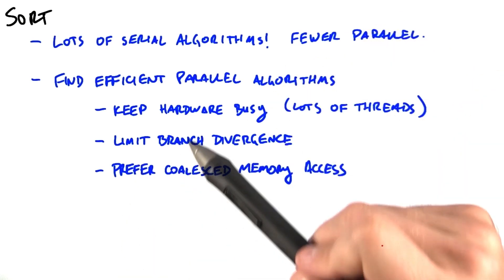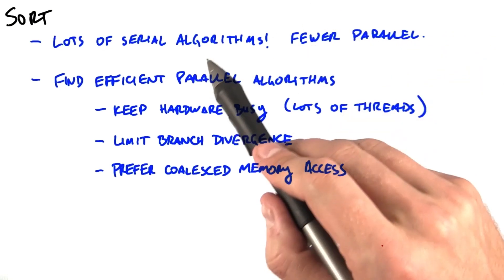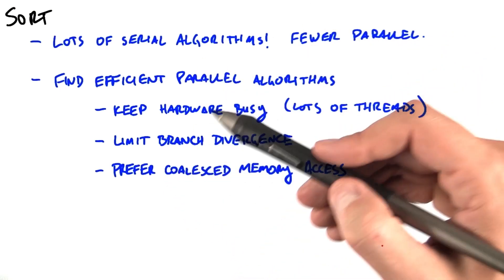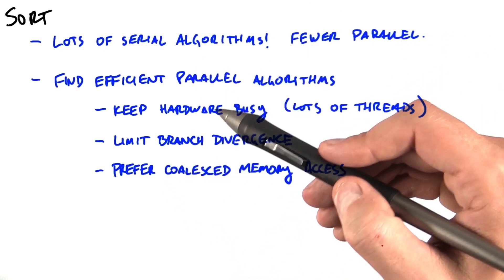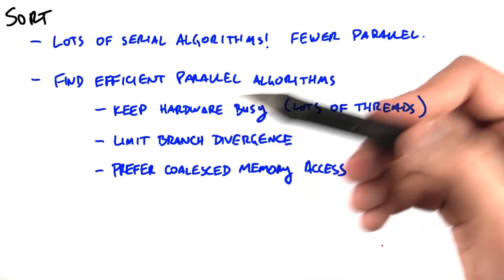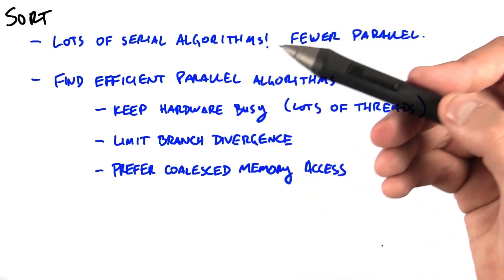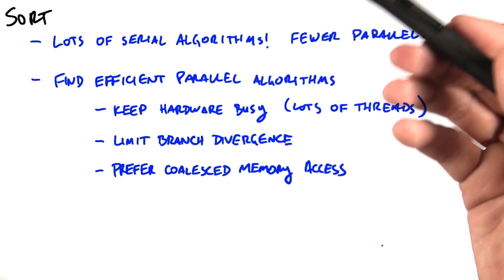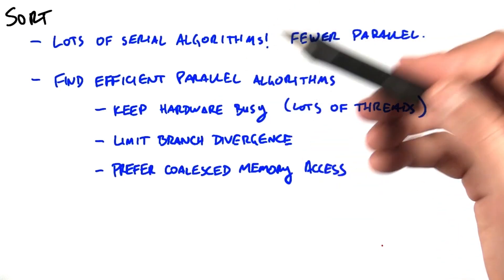Now, sort is a challenging problem on GPUs for several reasons. The first is that most sort algorithms are serial algorithms, or at least usually expressed in a serial fashion, particularly those you might have learned in an algorithms class. So all those nice algorithms that you learned in school are not necessarily applicable here, and we'll see this in a bit.